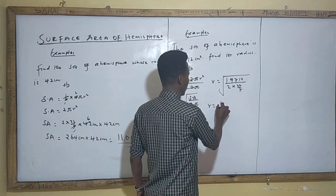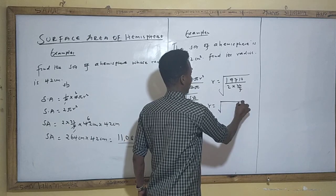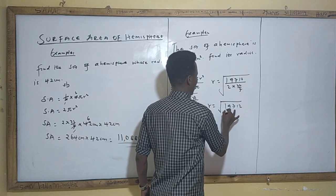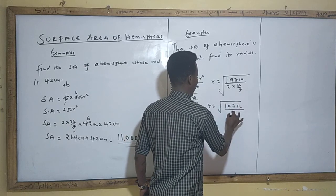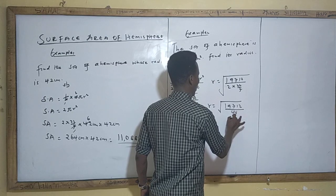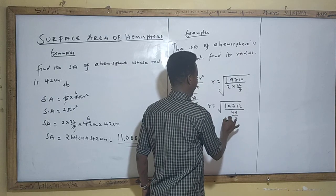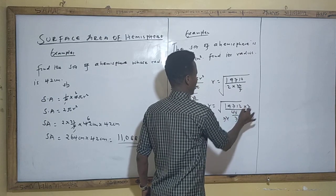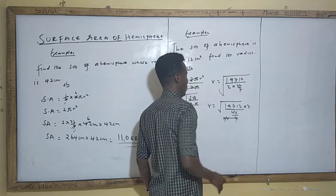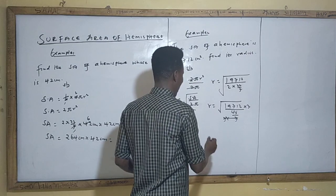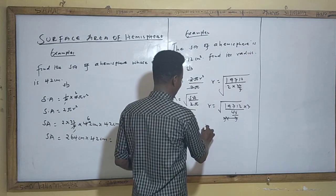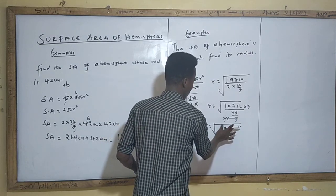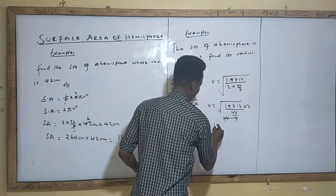So r equals the square root of 19712 divided by 44/7, times 7, giving us the square root of 1936.